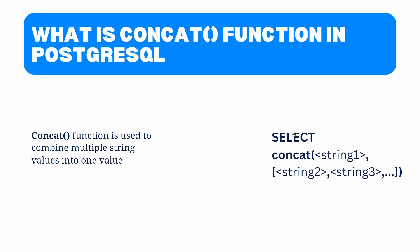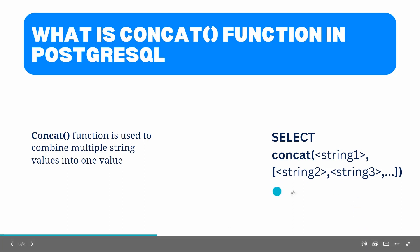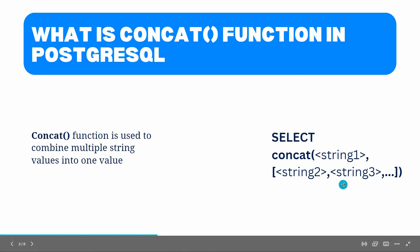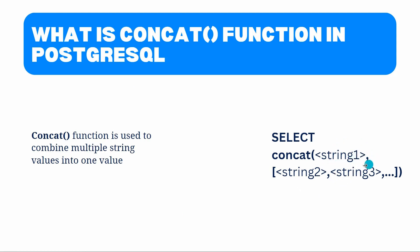The concat function is generally used to concatenate more than two strings in PostgreSQL. After the select statement, we specify the concat function. This function accepts a list of arguments that are required to be convertible to a string. A string can be any data type like character, varchar, or text. To specify multiple strings within the concat function, we specify the first string, then the second and third separated by commas.